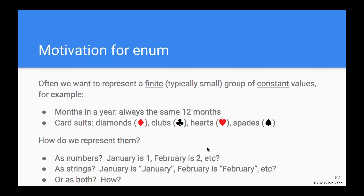So how do we represent them? There are a number of choices. We can use numbers, so January is number 1, February is number 2, and so on. Or we can represent them using strings - January can be literally the string 'January', February the string 'February', and so on.